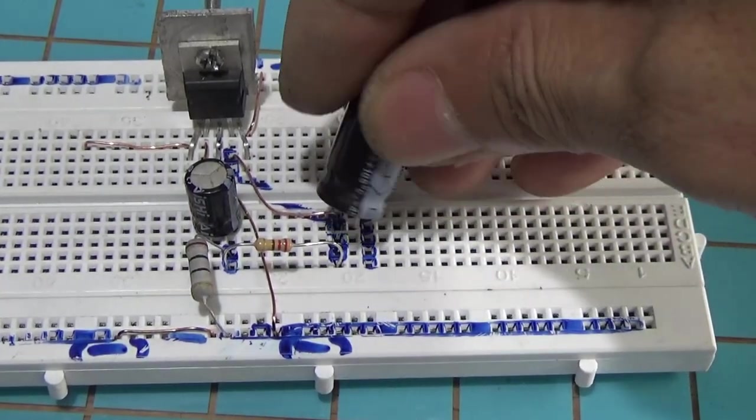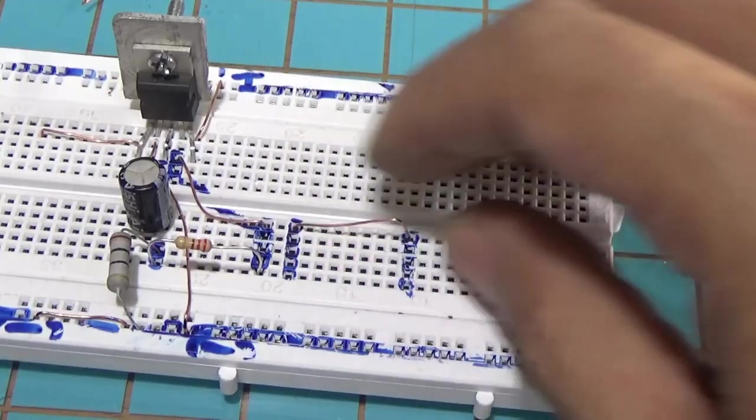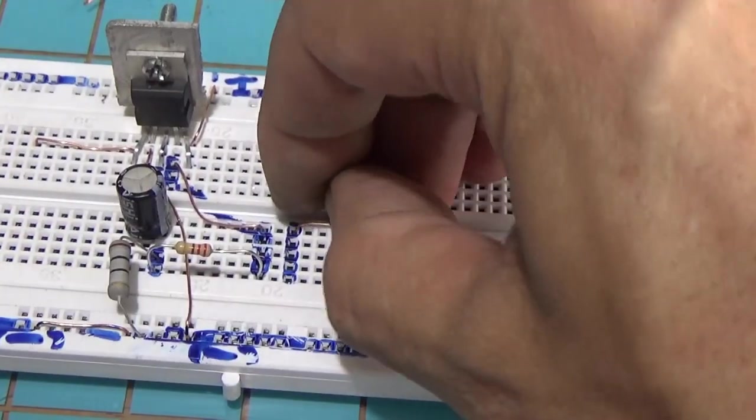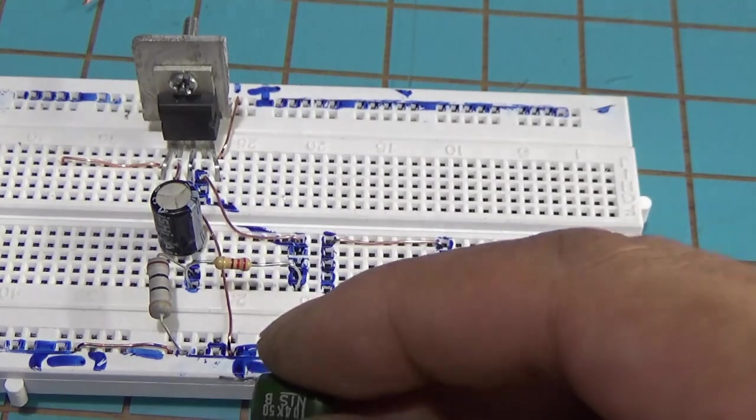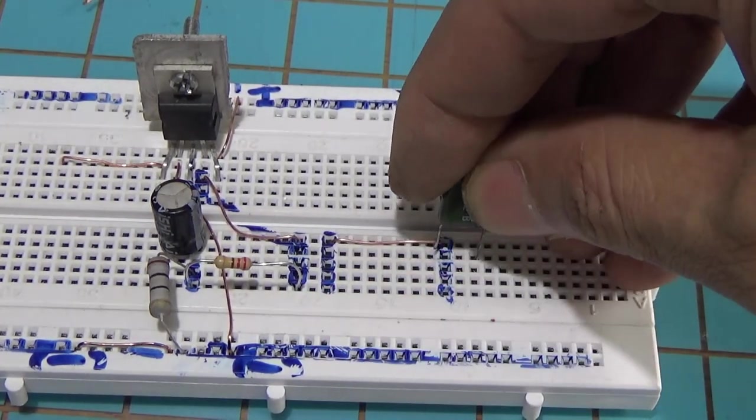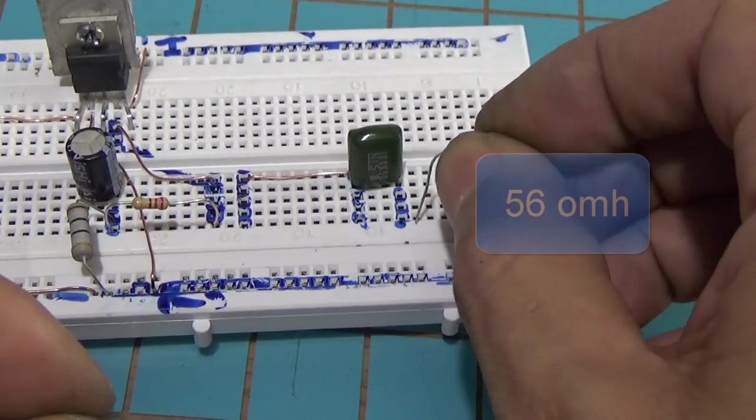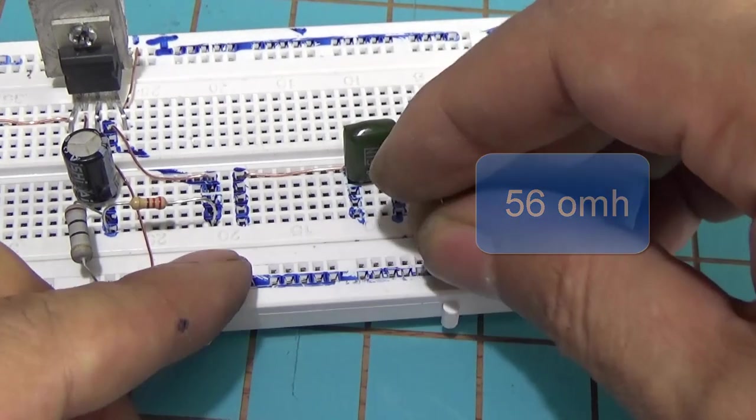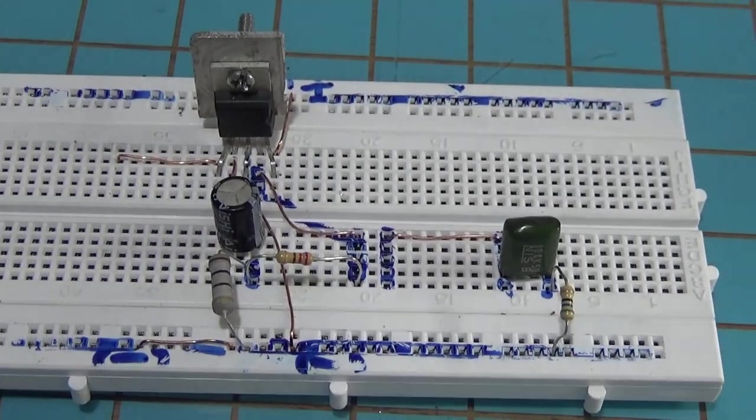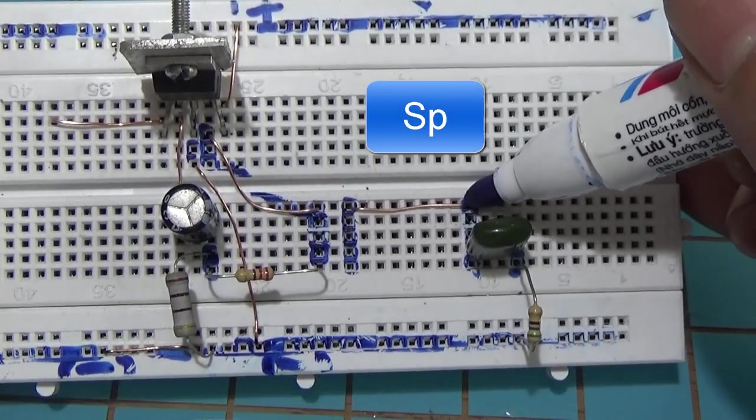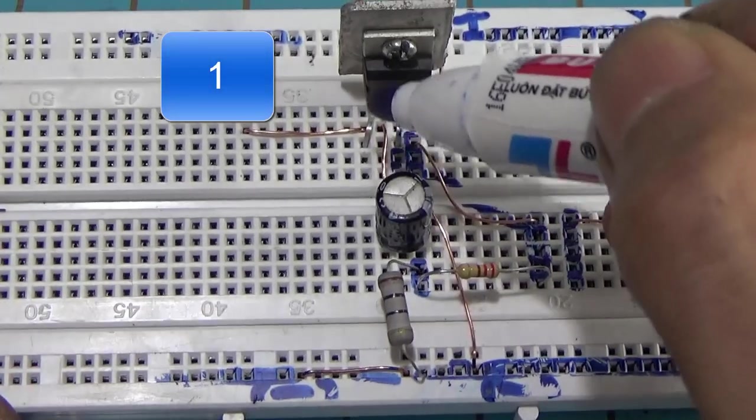Từ cái chân số 4 đó các bạn sẽ đấu qua một con tụ 1000 micro barra. Nhưng mà mình sẽ chưa cắm nó vào gội. Để cho dễ làm thì mình sẽ câu tiếp từ sau con tụ 1000 micro barra đó, mình sẽ đấu với con tụ 104. Đó là tụ gốm và các bạn có thể lấy bất kỳ nghĩa là sau nó có số 104. Sau con tụ 104 đó thì các bạn sẽ câu thẳng qua một con điện trở khoảng 20 cho đến 50 ohm xuống mát. Và đầu trên chính là đầu ra loa.